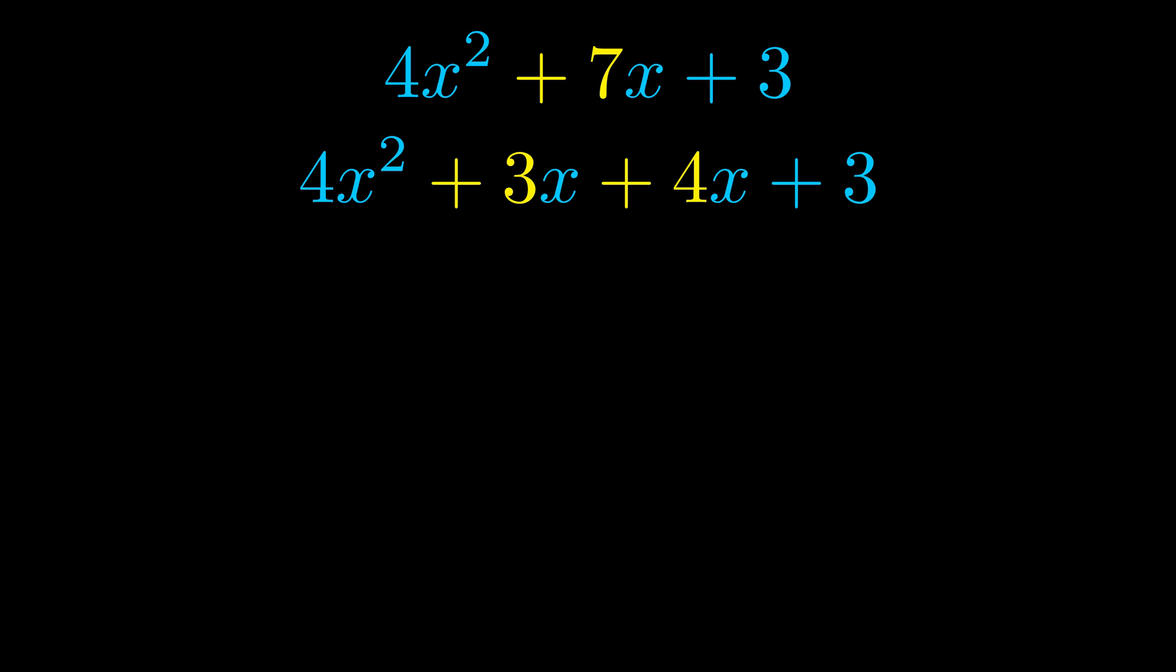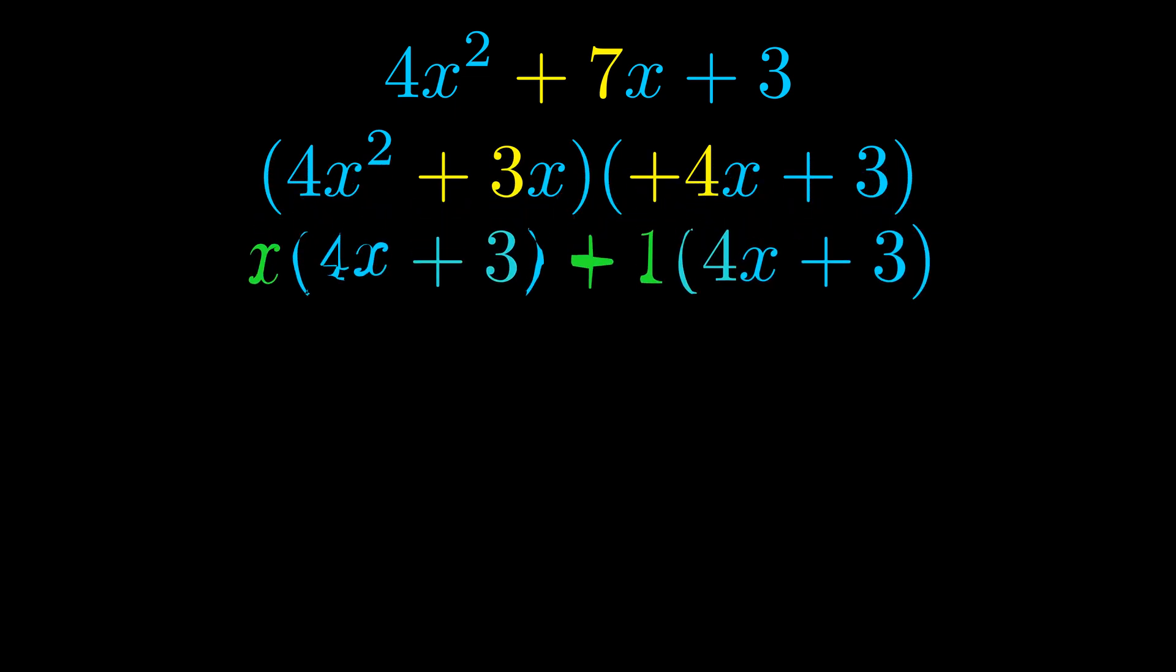Once we've done this we go ahead and we put parentheses around the first term and the last term. And we do that so that we can take the greatest common factor out of both terms. We can see the greatest common factor is now outside in green. Notice also how what remains inside of the parentheses is the same in both cases. The blue values are the same.